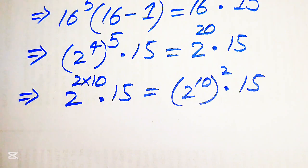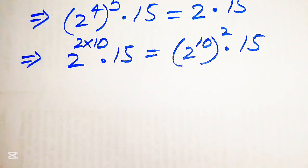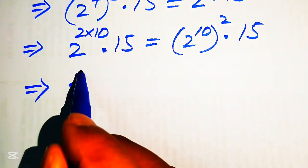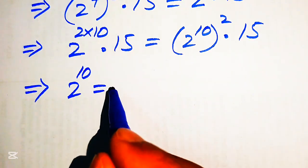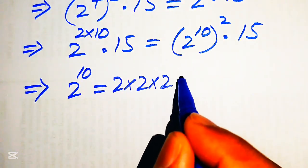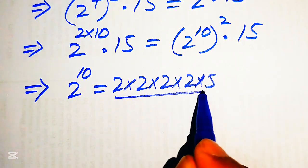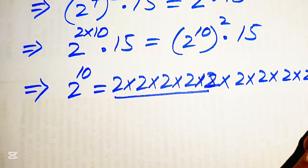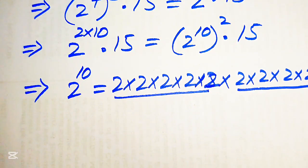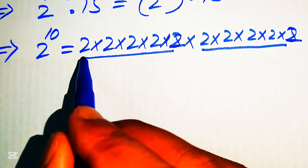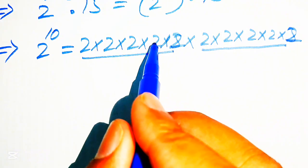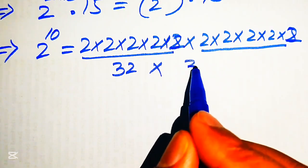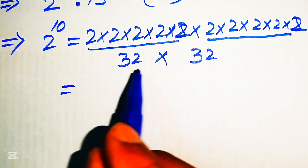Our next target is to find the value of 2 to the power of 10, meaning we multiply 2 ten times. We multiply 2 five times: 2, 4, 8, 16, 32. Then we multiply 2 five times again, which also equals 32, which means we now multiply 32 by 32.